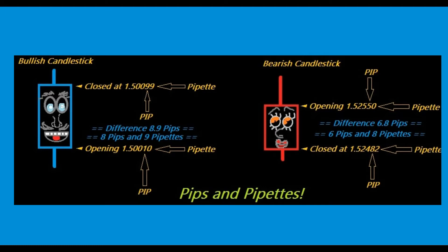So what happens if you took a trade at the opening of the bullish candle and it went up? In this case it went up to 1.50099. The 9 is the pipette and the last digit is the pipette. So it went up by 8.9 pips, or you could also say 8 pips and 9 pipettes — the same thing.